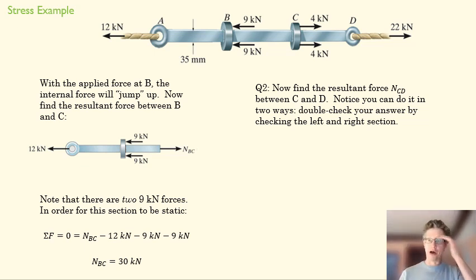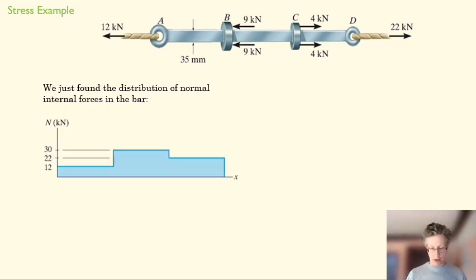All right. So if we're unpaused there, we'll go on to the next slide. And basically what we've found here now is the distribution of normal internal forces in the bar. From A to B, it's 12. It jumps up with this 18 kilonewton force there all the way to 30. Jumps back down with this 8 kilonewton force here and stays there till the end of the bar.